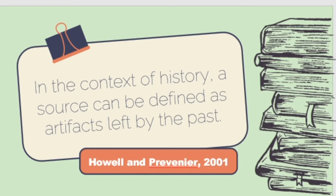You might ask why we need to study these things when there is already information we can just read and absorb. But we are in a new perspective of learning history, and even though things are already written, we still have to check if the facts or information we are getting are accurate or not. As the main basis for the study of history, knowing about the sources of history is a very important matter.